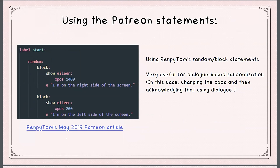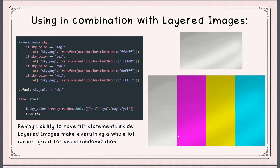We also have the Patreon article statements — the link to the article is here, it's public. The random and block statements are very useful for dialogue-based randomization, in this case changing the position and then acknowledging it using the dialogue.